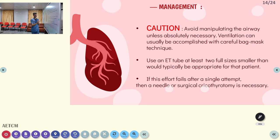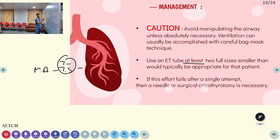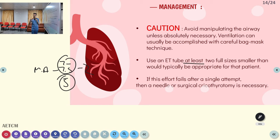If the person has any obstruction or the above-mentioned inflammatory conditions, you have to choose a tube two full sizes smaller — so if 7 is standard, choose 5 as the appropriate size. If the first attempt fails, then we can go for needle or surgical cricothyroidotomy. So for pre-hospital scenarios: first do basic airway management. If the person doesn't have any gag reflex or has worsening condition, go with an advanced airway — endotracheal tube. If unable to intubate, go with needle or surgical cricothyroidotomy.